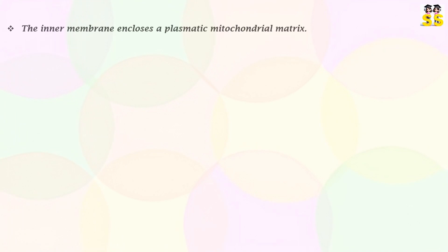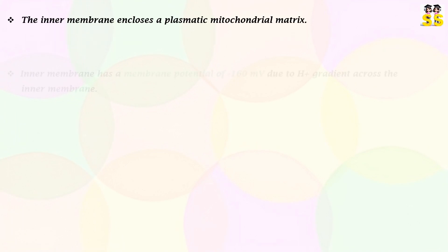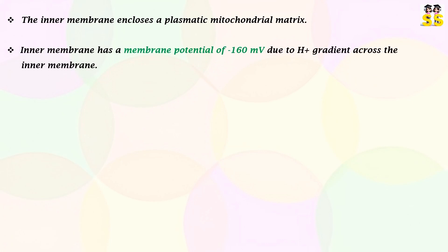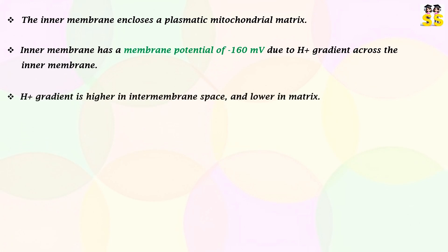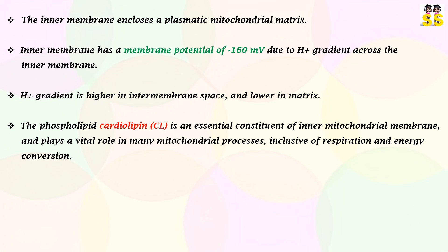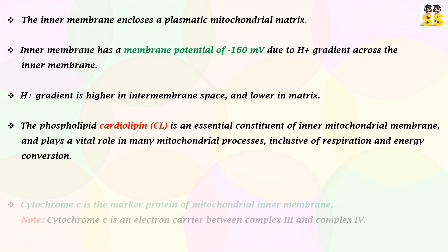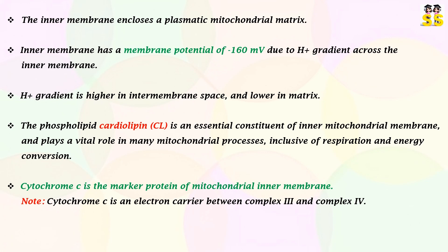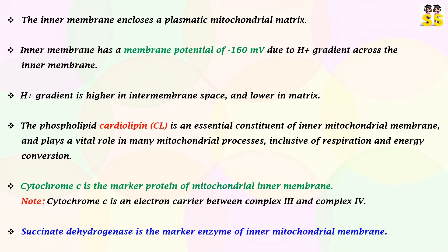The inner membrane surrounds the plasmatic mitochondrial matrix and has a potential of minus 160 mV due to the proton gradient across the inner membrane — higher in the intermembrane space and lower in the matrix. Cardiolipin is a specific phospholipid in the inner mitochondrial membrane that plays an essential role in many mitochondrial processes, including respiration and energy conversion. Cytochrome C is an electron carrier between Complex 3 and 4, and is the marker protein of the inner membrane. Succinate dehydrogenase is the marker enzyme of the inner membrane.